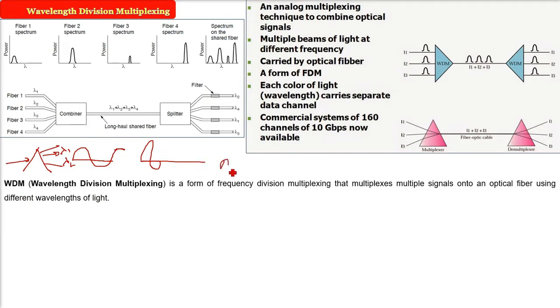It is an analog multiplexing technique where we combine the optical signals. So, multiple beams of light at different frequency, we are talking about optical fiber. So, this is a form of FDM only. Each color of light, that is what we are calling as wavelength, carries separate data cell. That is, they will be combined by the combiner and they will be split by a split up.